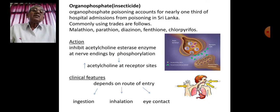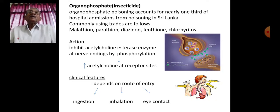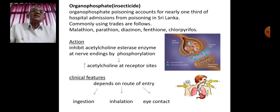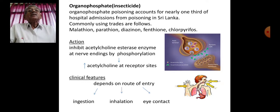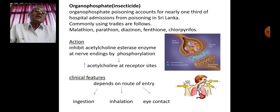The clinical features will vary depending upon the route of entry. The various routes are: ingestion — accidentally or intentionally; inhalation, which is also very common because farmers spray pesticides with a sprayer in the field and may inhale it without due care; and eye contact, which can also take place in the field.